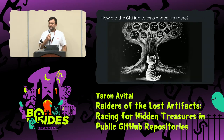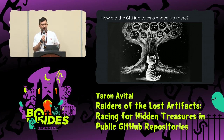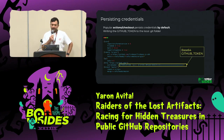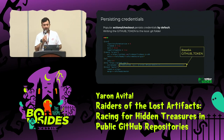Because secret scanning involves a lot of false positives, I wanted to be sure these tokens were the real deal. So I decided to dig in and find out how they ended up in the artifacts. I quickly found out that the immensely popular 'actions/checkout' action — I think it's the number one action on GitHub — stores and persists the GitHub token inside the local .git folder by default.